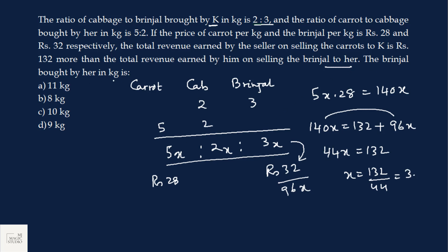And the common ratio is 3. The brinjal bought by her in kgs. She bought 3x kgs of brinjal. 3 into 3 is 9 kg. She bought 9 kgs of brinjal. That is in option D.